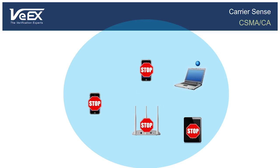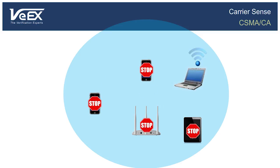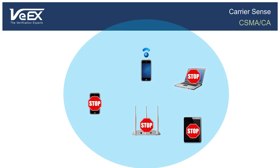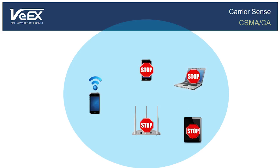Wi-Fi devices use something called Carrier Sense to detect RF activity on the channel. If a device happens to be in the middle of a transmission, the others will wait until the channel is free. You can think of it like a room full of very polite people where everyone is waiting for their turn to speak, but how much they can communicate is regulated by the number of people waiting to talk. In the case of Wi-Fi, the available bandwidth is effectively divided by the number of devices attempting to transmit at any given time.